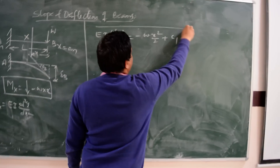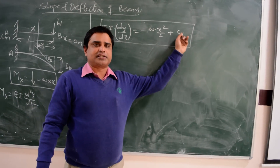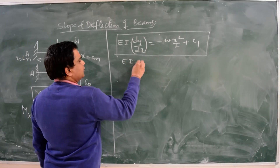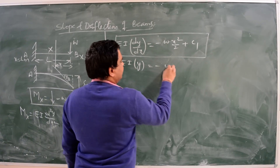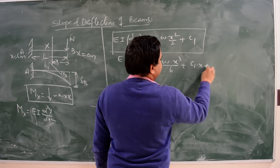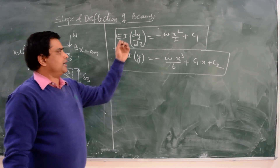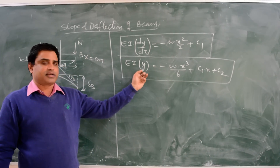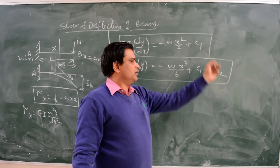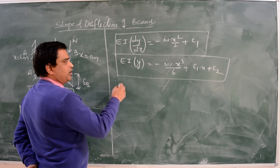This is the slope equation, where C1 is the first integration constant. Integrating again gives the deflection equation: EI times y equals minus W times x³/6 plus C1 times x plus C2. This is the deflection equation. The first integration gives slope and the second integration gives deflection. Both C1 and C2 are unknown constants to be determined from boundary conditions.